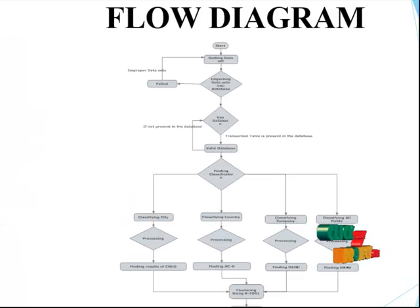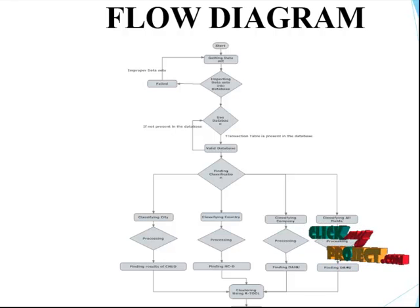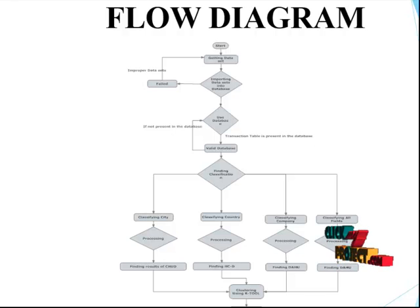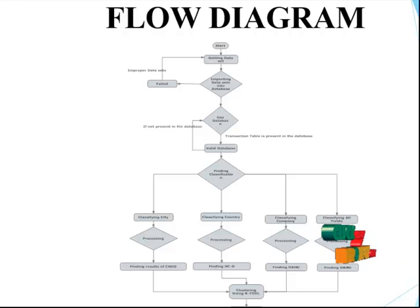Here we see the flow diagram of our process. It starts with getting the dataset, inputting the dataset into the database, then validating the dataset. It then proceeds to classification — classifying by city, country, company, and all fields. Processing then finds results including CSUD, HCCD, and TANU, followed by clustering, audio analysis, performance analysis using a graph, and the process ends.